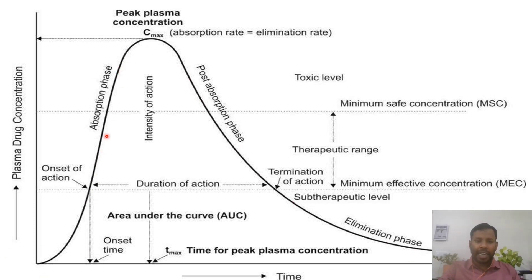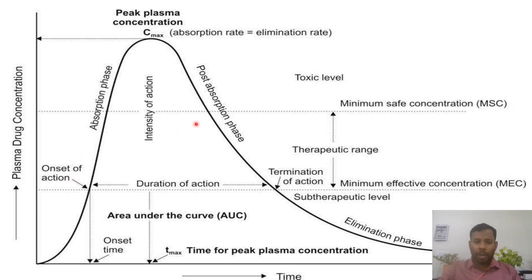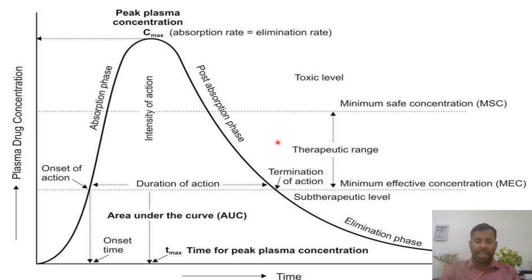First it will increase to a highest point, then it will decrease. The left side of the curve is called the absorption phase, and the right side is the post-absorption phase, then the elimination phase. In the absorption phase, rate of absorption is more than the rate of elimination. But on the right side of the curve, rate of elimination is more than the rate of absorption.